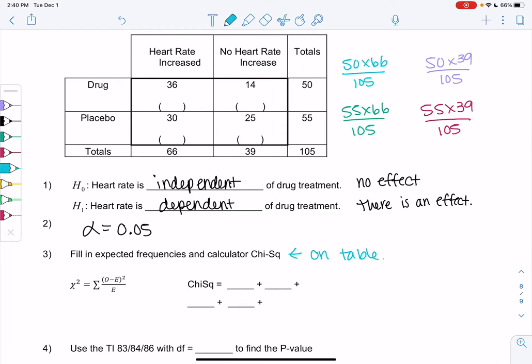So hopefully you got the numbers. So I got, for 55 times 66 over 105, I got 31.43. So if there's no effect, if the heart rate is not an effect or side effect, then we should have had about 31 people in the drug group who just happened to have their heart rate increased. But we have 36, so it's a tiny bit different.